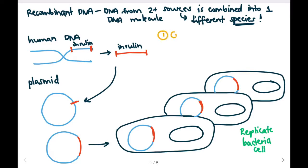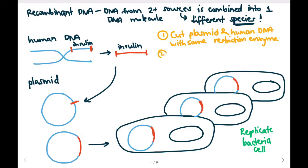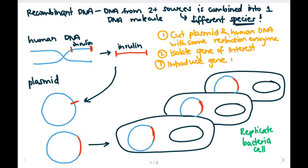The steps to make recombinant DNA are: first, cut the plasmid and the donor DNA with the same restriction enzymes — this is key because you want to produce the same sticky ends so that you can ligate the DNA together. Step 2 is to isolate the gene of interest; in this case, the insulin gene.